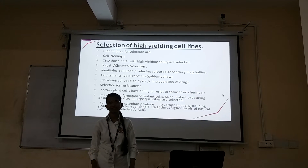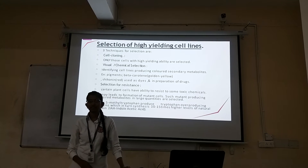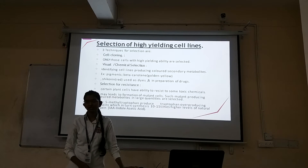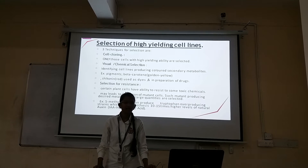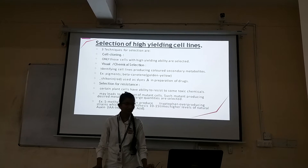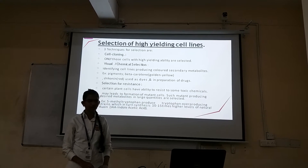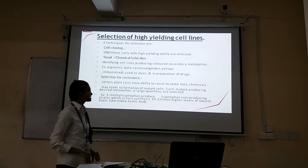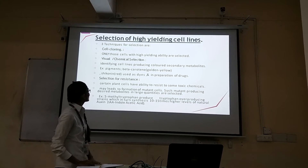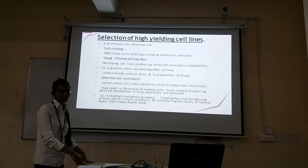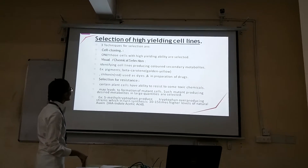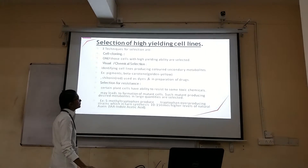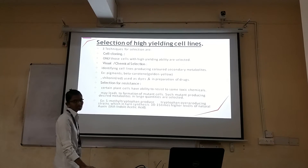Selection of high yield cell lines means selecting the plant which produces high secondary metabolites. There are 3 techniques: cell cloning, visual and chemical selection, and selection for resistance. Cell cloning involves making many copies, and only those cells are selected which have a high ability for feeding cell lines.